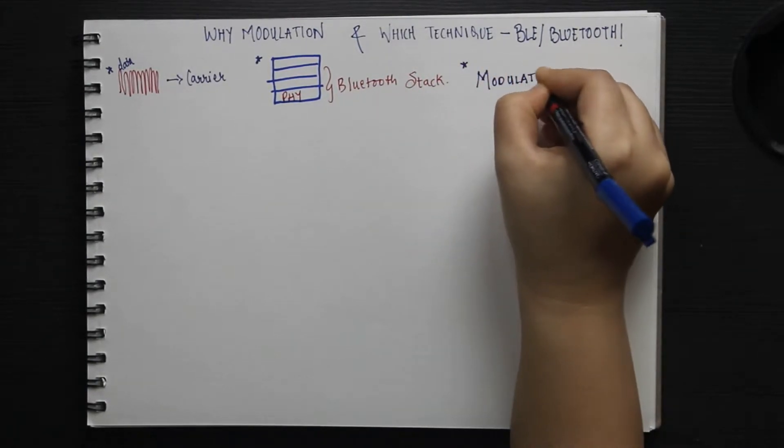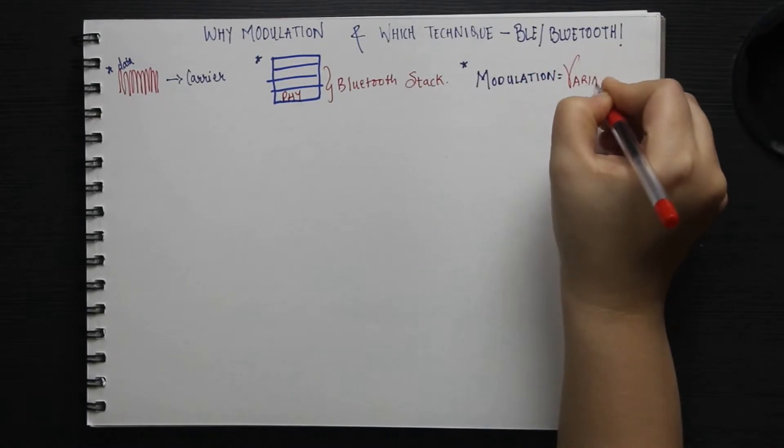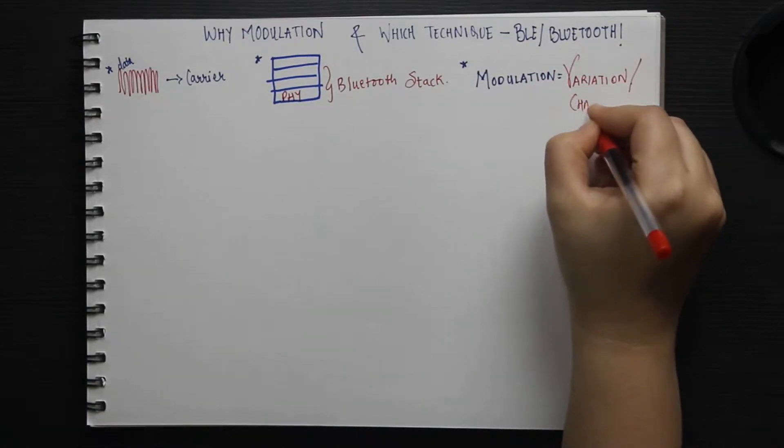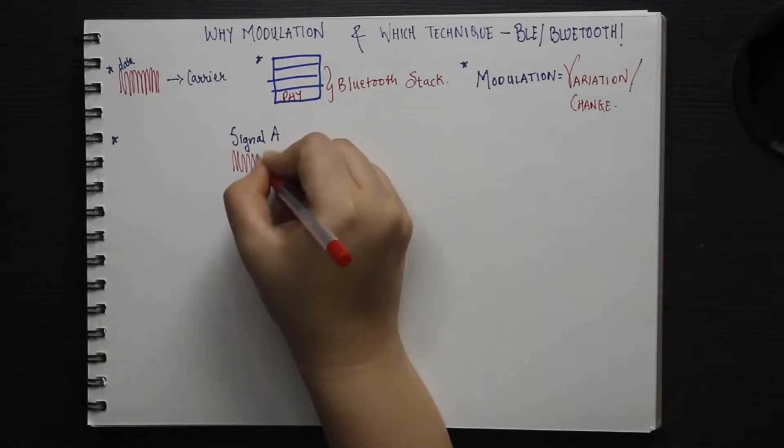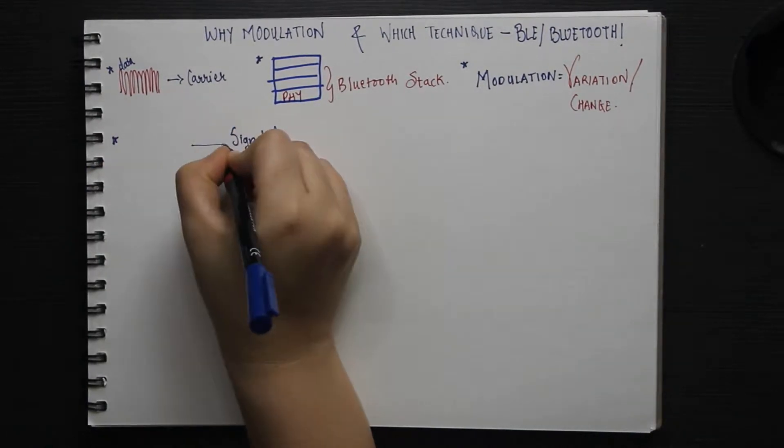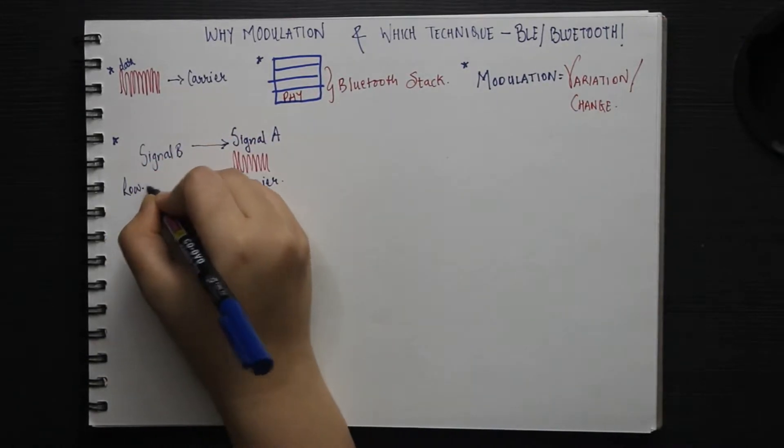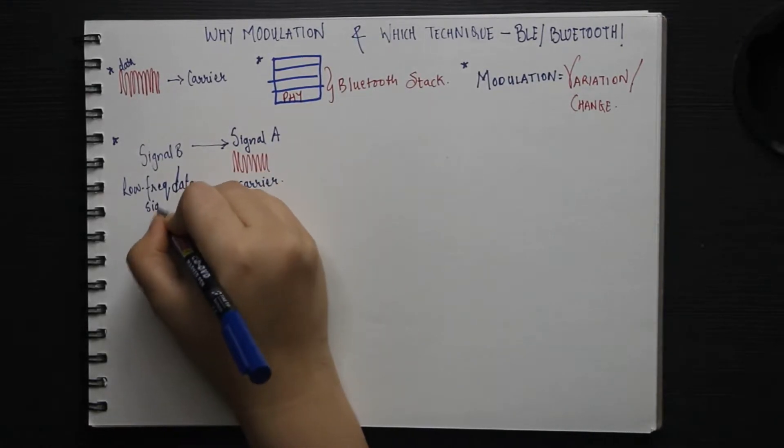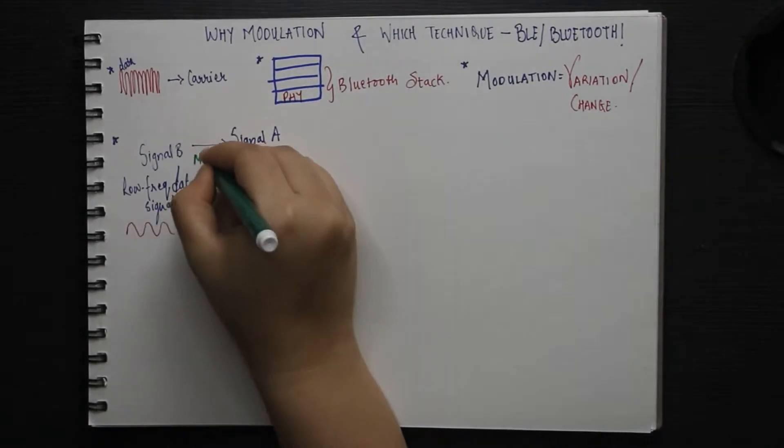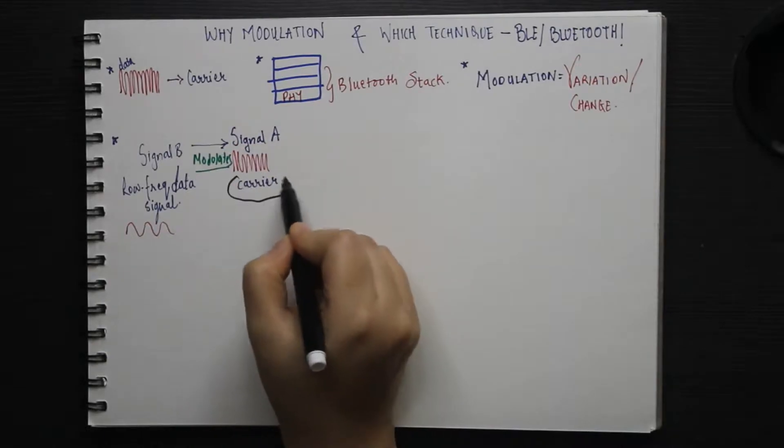The actual meaning of the term modulation is variation. Here, the properties or attributes of one signal are varied by another one. The signal whose properties are varied is a high frequency signal called the carrier signal. And the signal that causes these changes is the low frequency data signal which is also known as modulating signal.